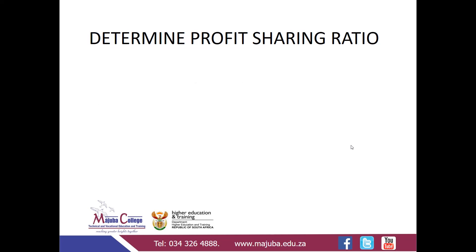In this slide, I'd like to discuss the principles relating to the determination of the profit sharing ratio. As specified under the partnership agreement, the partners share the remaining profit in a ratio of two, representing Kite, to one, representing Quarry. Adding two and one gives three, which becomes the denominator. Kite's profit sharing ratio is two over three, and Quarry's is one over three.